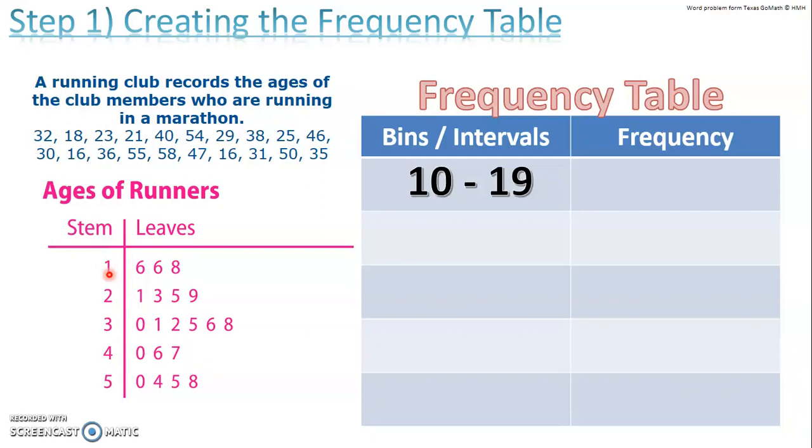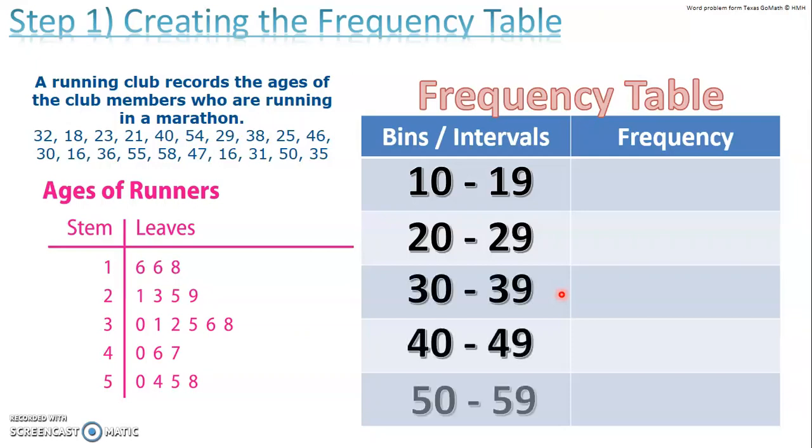Interval is just a range of numbers. So let's use between 10 and 19. And I want to do my next interval. Now, my next one is a 2. So it goes from 20 all the way to 29. Notice we don't say 10 to 20, 20 to 30, 30 to 40. If I did that, then I would start to notice that there's a lot of overlap. And we don't want that because if we have overlap, we're not going to be able to correctly understand the frequency for each category.